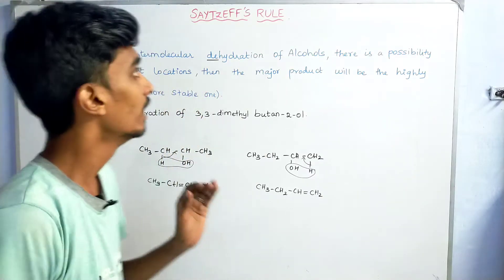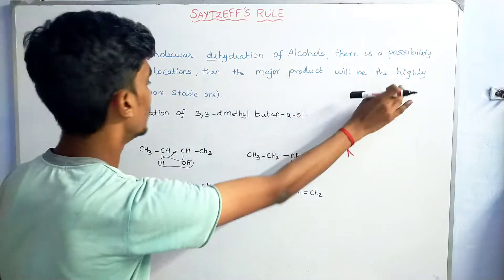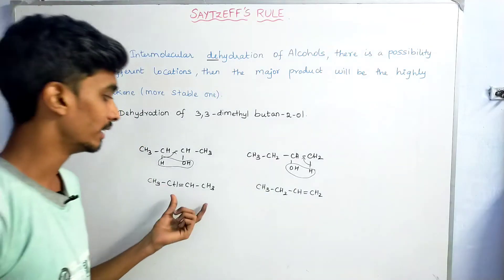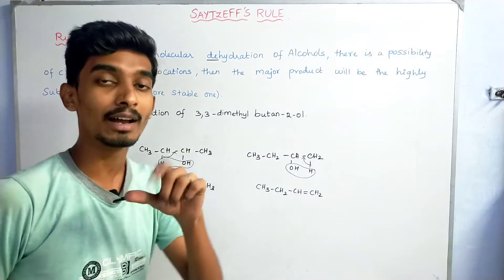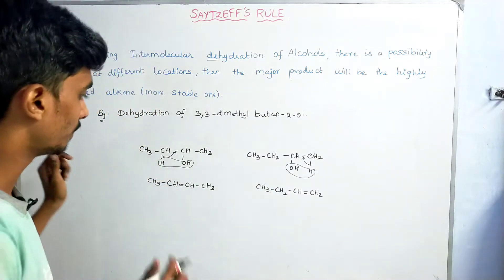What we say is: the product will be a highly substituted alkene. Here is the highly substituted alkyl group in the product.